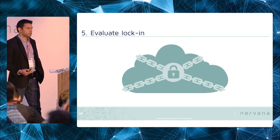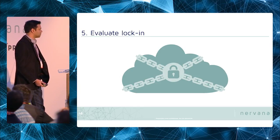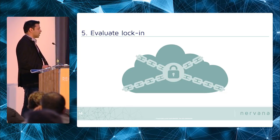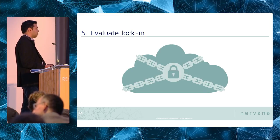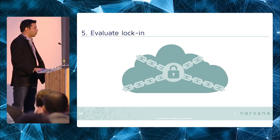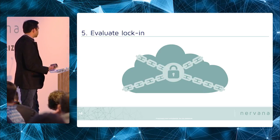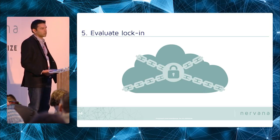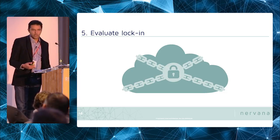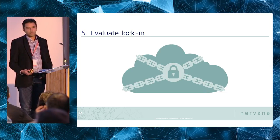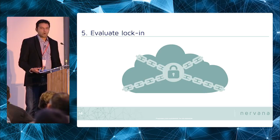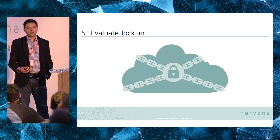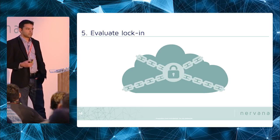Another important consideration with any technology — and this is true for deep learning also — is evaluating the degree of lock-in you're getting into. If you choose a cloud service, choosing one might make it difficult to use a competing service. Although deep learning has been very open, with academics publishing papers, code, and frameworks, there are still some proprietary things — data being one of the biggest ones. So you want to evaluate what kind of lock-in you're getting into and how the owners of the underlying technologies are incentivized.